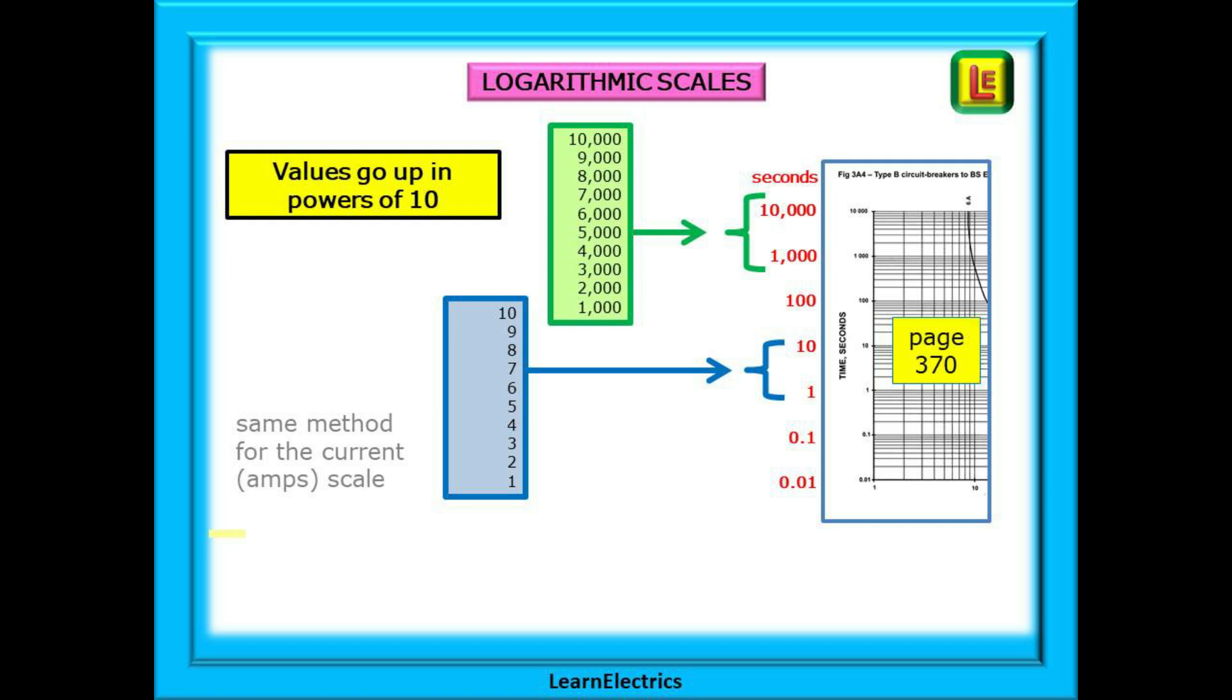Look at the blue box. This is the numbers 1 to 10. Each horizontal line here represents an increase of just one second: one, two, three, four and so on.